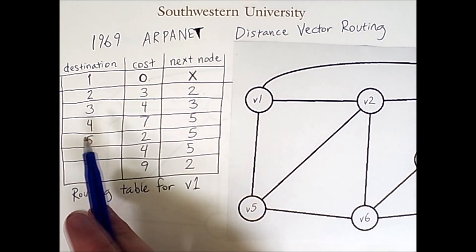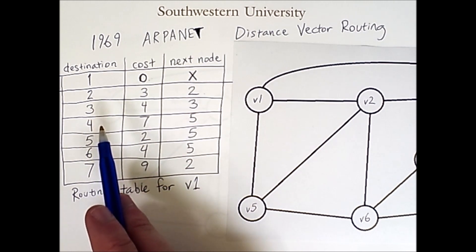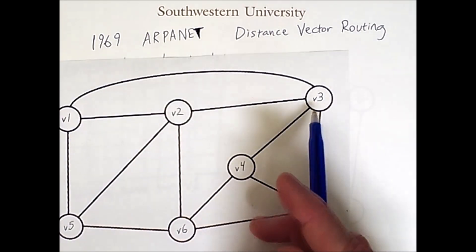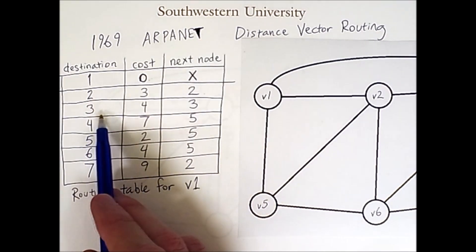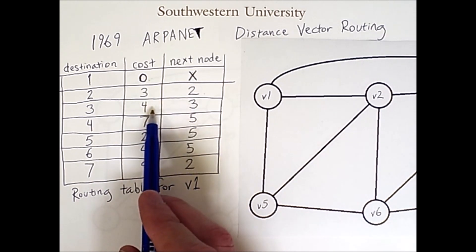If the final destination of the packet is node 2, shown here, then node 1 can send the packet directly to node 2 for a cost of 3. Now we can go through this and see some things which are not too surprising. For example, to get to node 3, which is here, node 1 can send the packet directly to node 3 for a cost of 4.